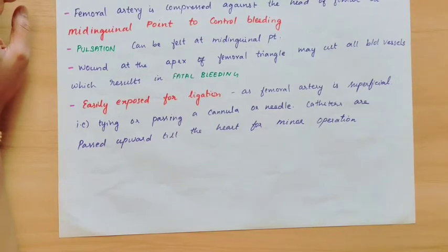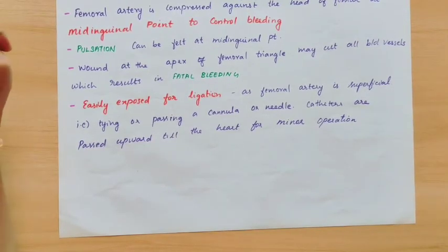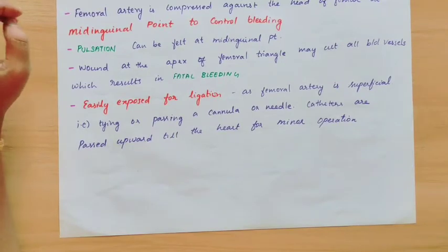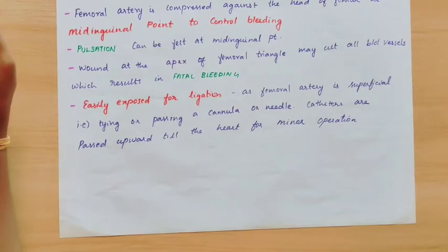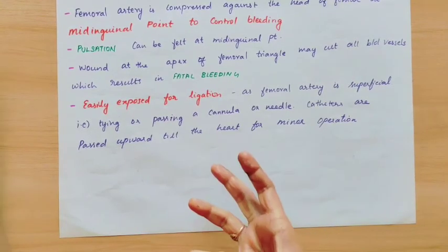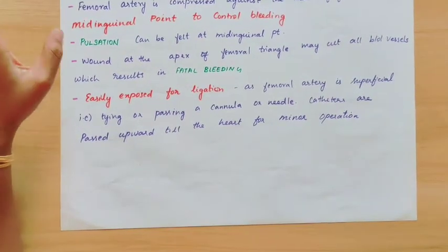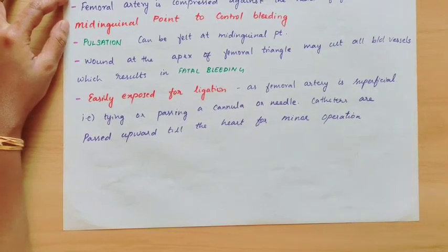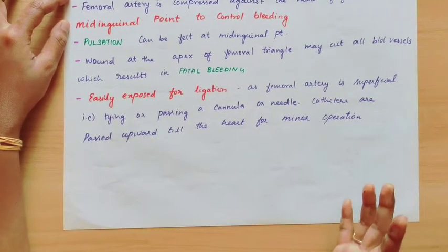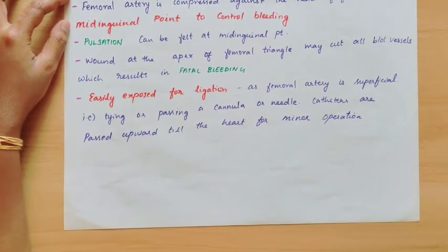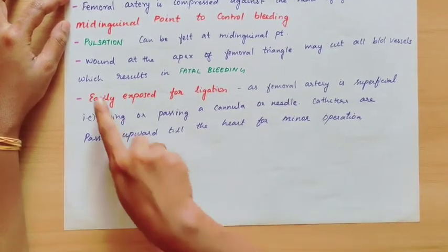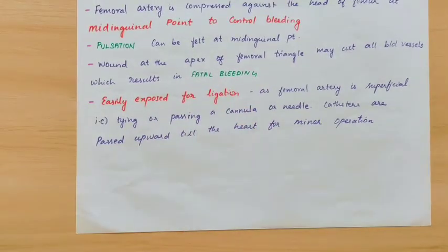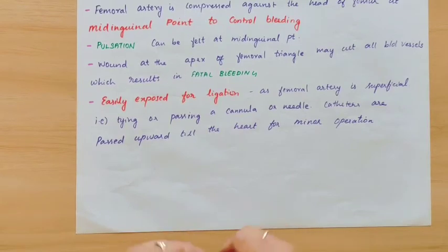Now for clinical anatomy. First, if there is heavy bleeding in the lower limb, you can compress the femoral artery against the femur at the mid-inguinal point to control bleeding. Second, pulsation of the femoral artery can be felt at the mid-inguinal point; if absent or feeble, it indicates blockage or narrowing of blood vessels. Third, severe injury to the apex of the femoral triangle can cut large blood vessels of the lower limb, resulting in fatal bleeding. Fourth, the femoral artery is quite superficial, making it easily exposed for ligation in surgical procedures.